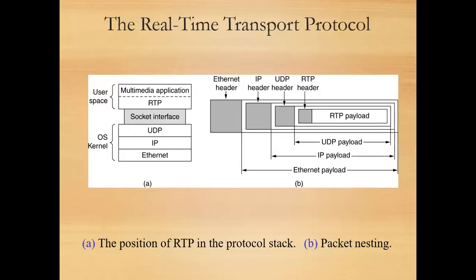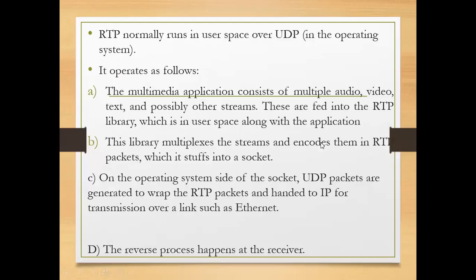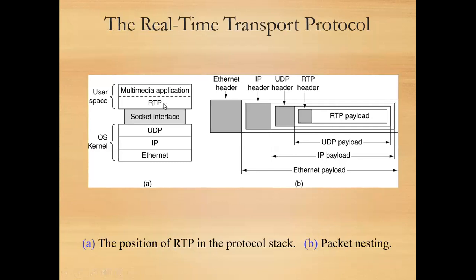The first diagram shows the position of RTP in the protocol stack, and next is packet nesting. The protocol stack is divided into two parts: user space and kernel space. RTP's position is just below the multimedia application and above UDP. RTP normally runs in user space over UDP. Here is RTP in user space, and it runs over UDP.